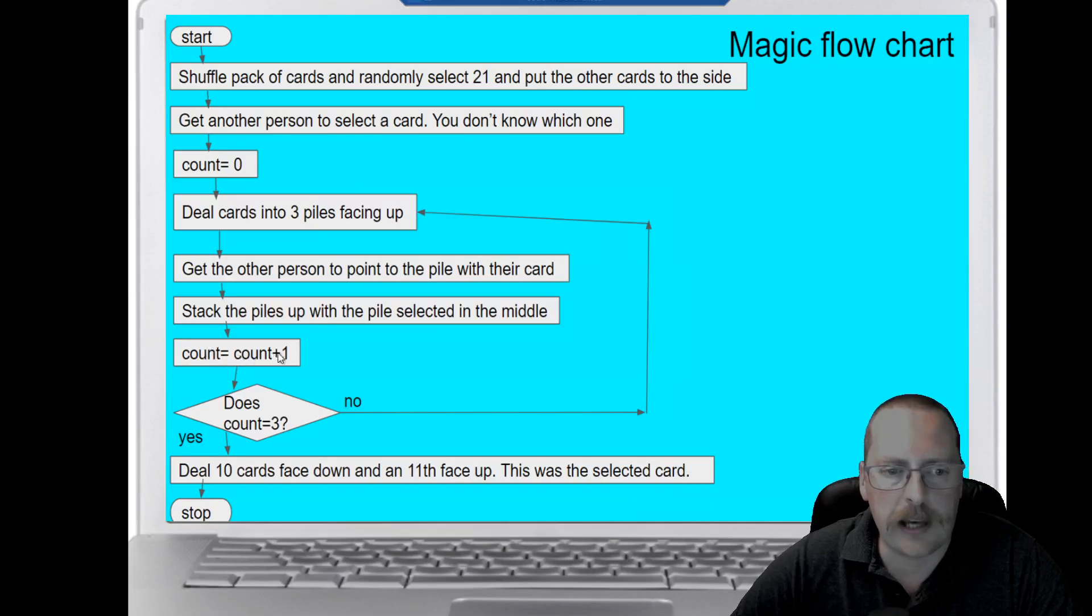Count equals count plus one. So here it is zero, so zero plus one, and our new answer for count is now one. Does count equal three? Well it doesn't, so we go round the no.